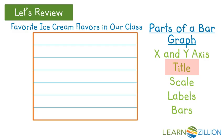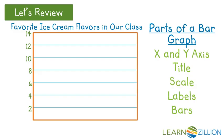We always have the title of the bar graph — in this case it's going to be 'Favorite Ice Cream Flavors of Our Class.' We always have the scale, which is the numbers we are going to use along the y axis, vertically. In this case we're going by 2, 4, 6, 8, 10, 12, and 14.